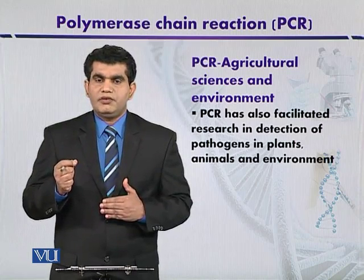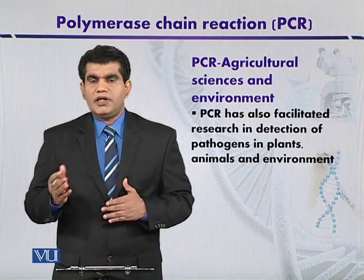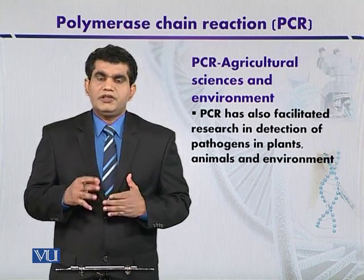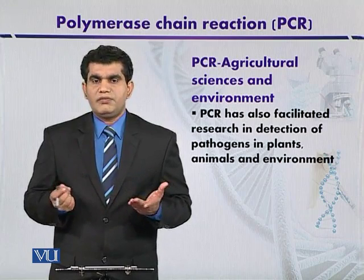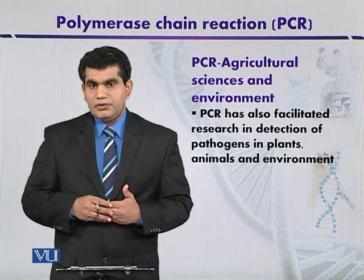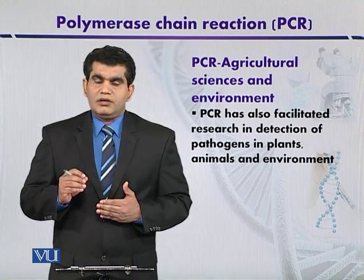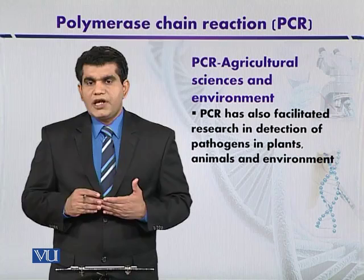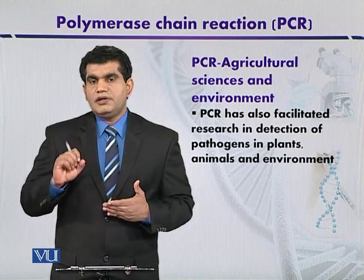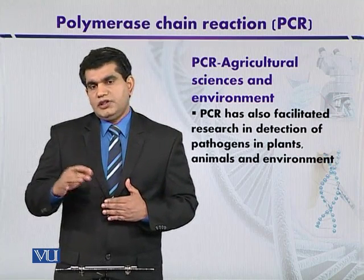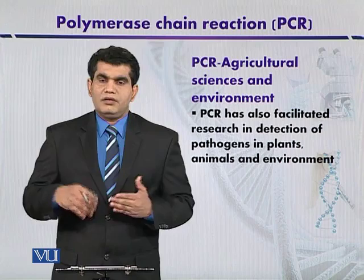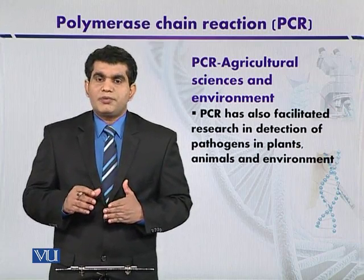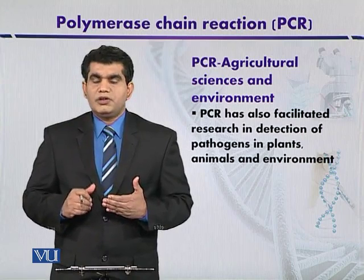Shiga toxin gene 1, commonly called SLT1, or SLT2, can be targeted. Certain strains of Escherichia coli that may be harmful, like E. coli O157:H7, are one example of a pathogenic strain that can cause infection in humans due to its food-borne nature. Food-borne diseases can be prevented by detecting these pathogens. PCR can be used for this purpose — different studies have been conducted showing the presence of pathogenic microbes and their detection using PCR.